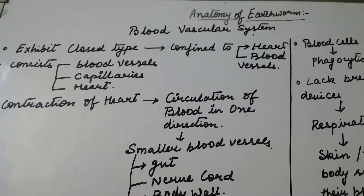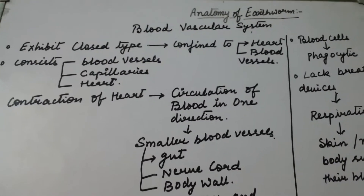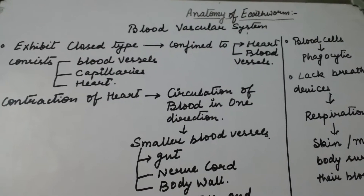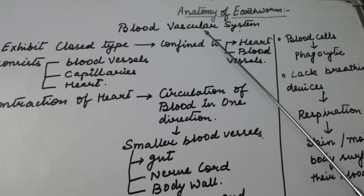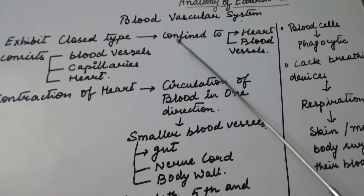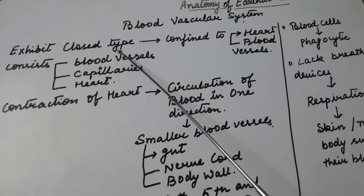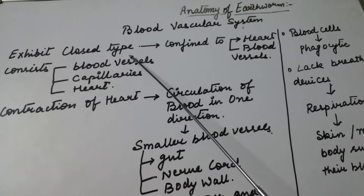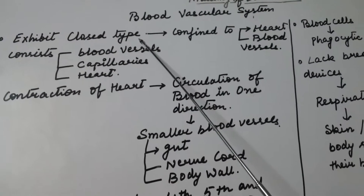Hello students, after the anatomy of the elementary canal, we will move further towards the anatomy of the blood vascular system of earthworm. Earthworm exhibits a closed-type blood vascular system, which means the blood flows in one direction.